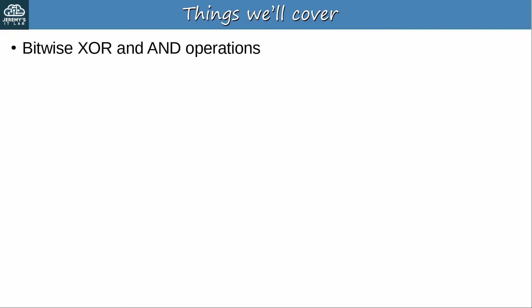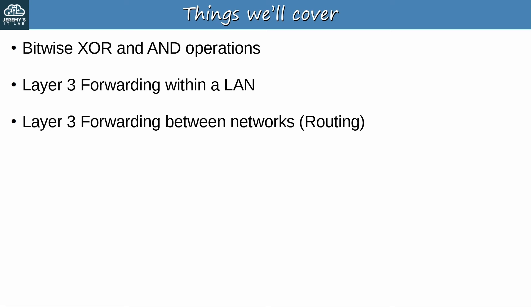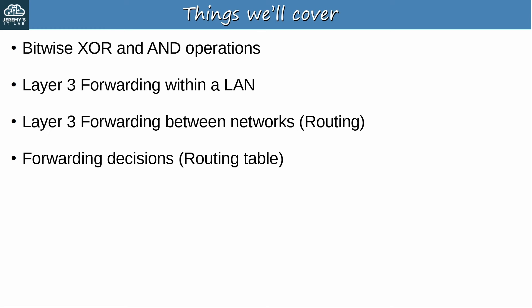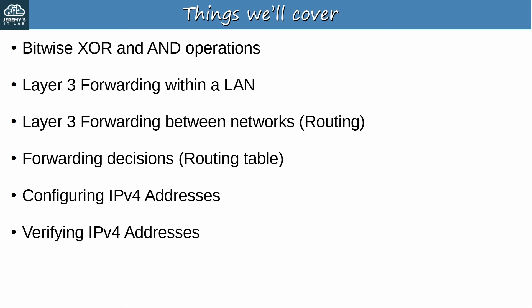Here's what we'll cover in this video. First, we will look at the XOR and AND operators that hosts use to determine if a destination is in the same subnet. This isn't something you actually have to learn for the ENCOR exam, but I consider it general education that someone studying networking should be aware of. Then we'll look at layer 3 forwarding within a LAN, meaning within the same subnet. Then we'll look at layer 3 forwarding between networks, which is where routers come into play. We will also review how routers make forwarding decisions — how they decide which route in the routing table is the best one to use for a packet. Then we will review how to configure IP addresses and review some show commands to verify their configurations. Finally, I will introduce the concept of directed broadcasts, something we didn't cover in the CCNA.